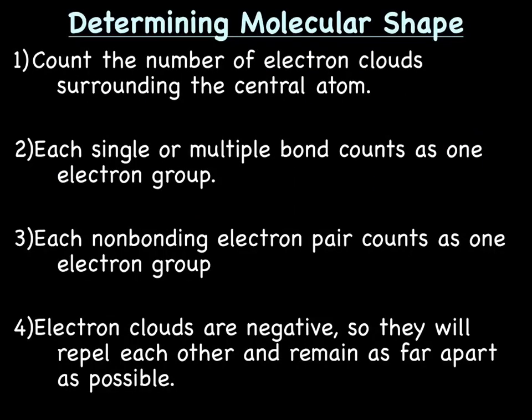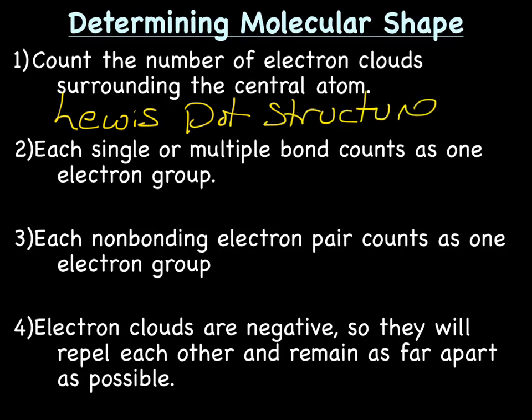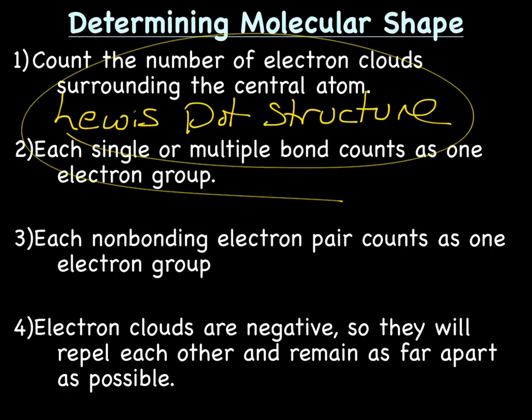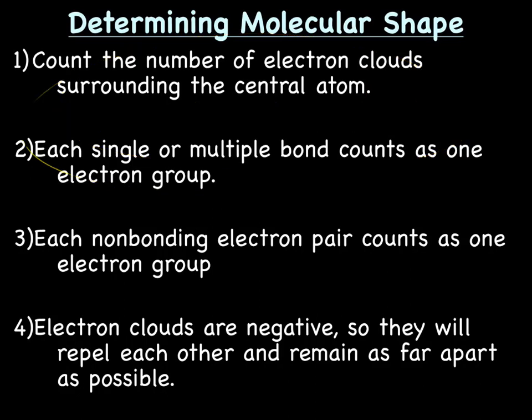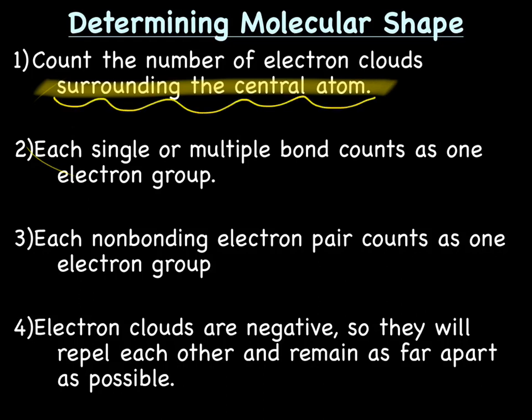Okay, so let's determine molecular shape. How do we go about doing that? The very first thing is that this is all dependent on the Lewis dot structure of the atom. So you've always got to start with drawing the Lewis dot structure. First of all, count the number of electron clouds surrounding the central atom. That's a really important part. We don't care about every electron cloud, just the cloud surrounding the central atom.